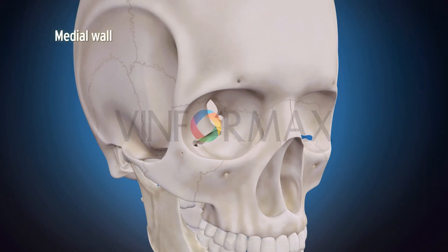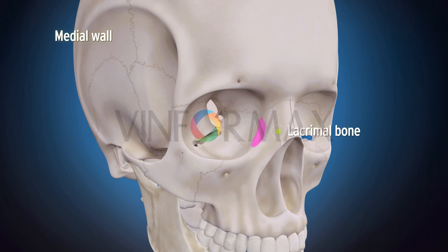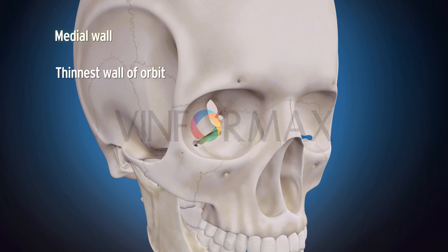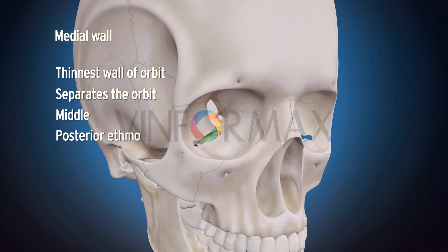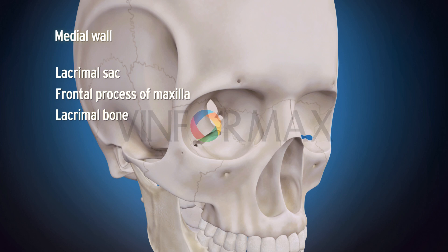The medial wall is formed by the frontal process of maxilla, lacrimal bone, orbital plate of ethmoid, and the body of sphenoid. It is the thinnest wall of the orbit and separates the orbit from the middle and posterior ethmoidal sinuses. The lacrimal sac is present between the frontal process of maxilla and the lacrimal bone.